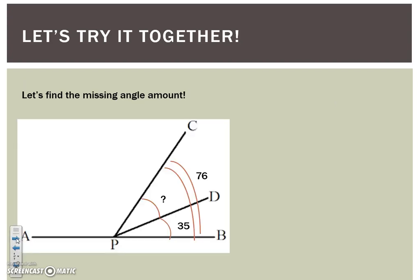Let's try one last one together. We know that my whole angle is 76 degrees. We know that part of the angle measures 35, and we're trying to find this missing piece.